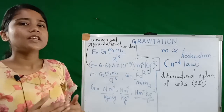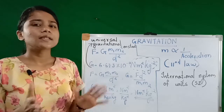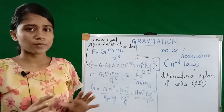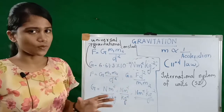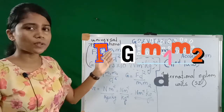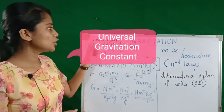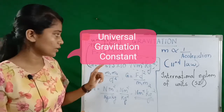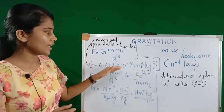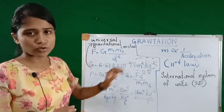Hi guys, today we are going to continue with the chapter gravitation. In the previous class you learned how to calculate the force between any two objects in the universe. That is, force is equal to G into m1 m2, the whole divided by d square. G is the universal gravitational constant and the value is 6.673 into 10 raised to minus 11 Nm² kg⁻².